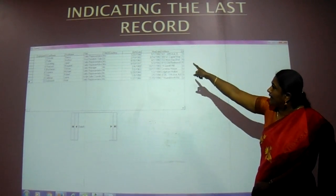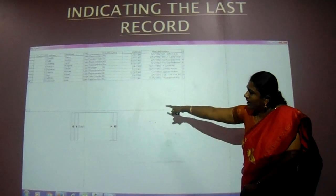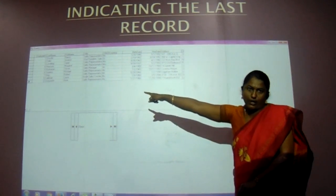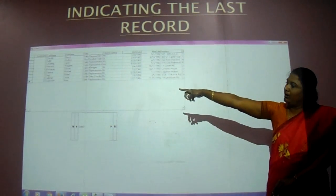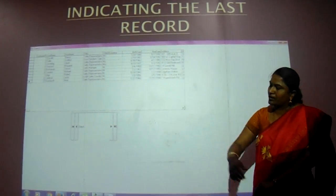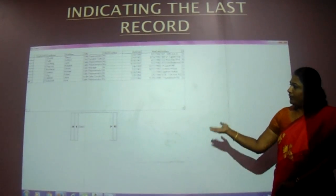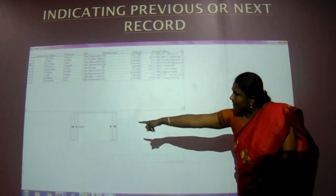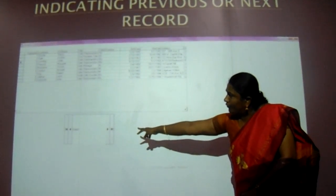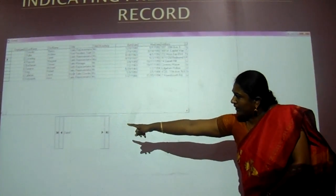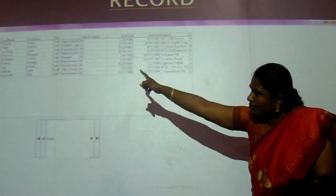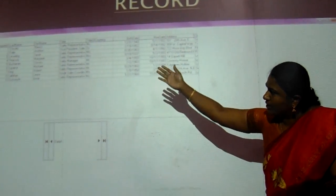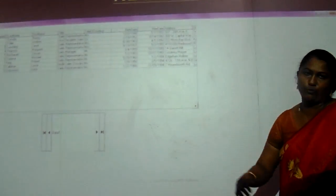Here, we are indicating the last record. When you press the last button, it goes to the last record of your table, indicated by the arrow mark symbol. If you press the second or third button, it moves the records to the previous one and the next one.